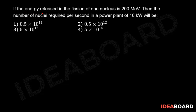If the energy released in the fission of one nucleus is 200 MeV, then the number of nuclei required per second in a power plant of 16 kilowatt will be?